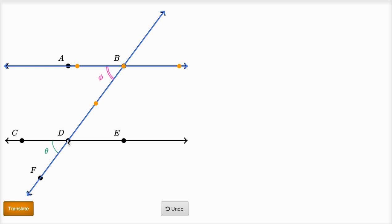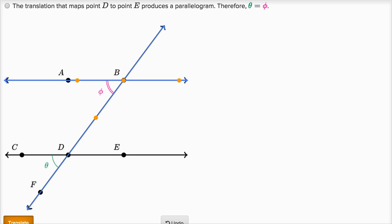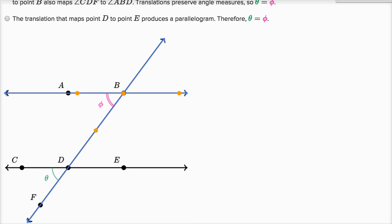So this is one way to think about it. I just translated the point D to B, and then it really just translated angle CDF over angle ABD, to show that these have the same measure, or at least to feel good about the idea of them having the same measure. So let's see which choices describe that.